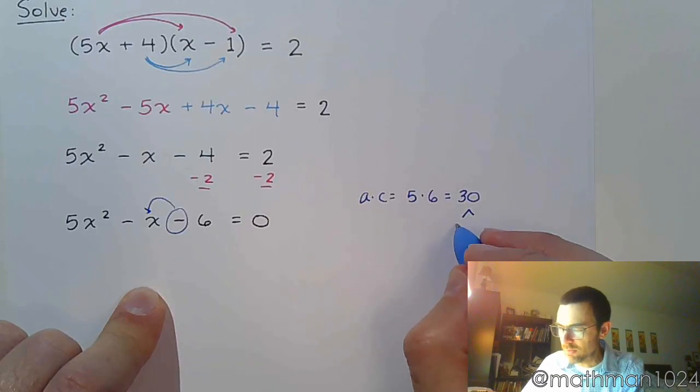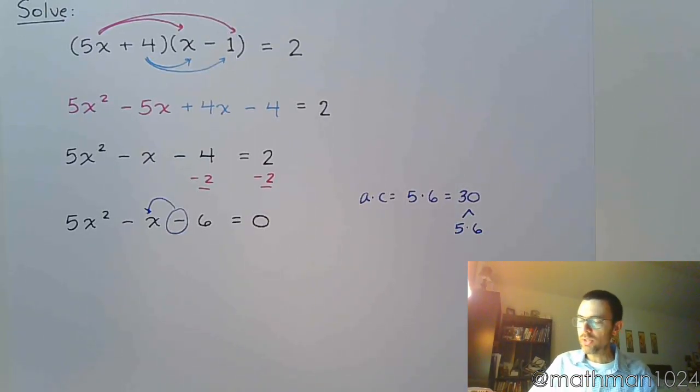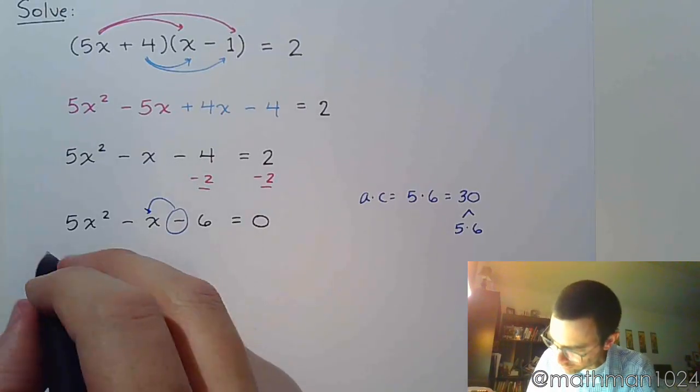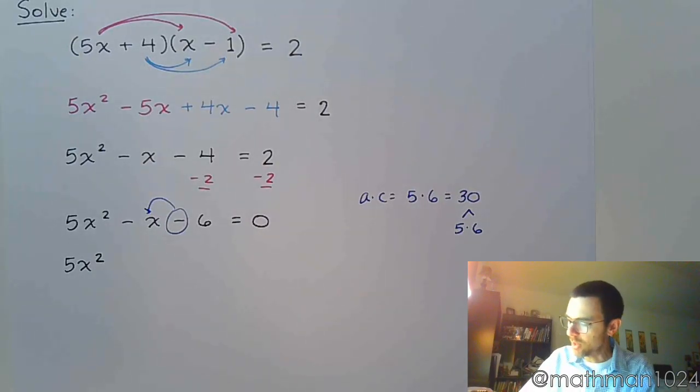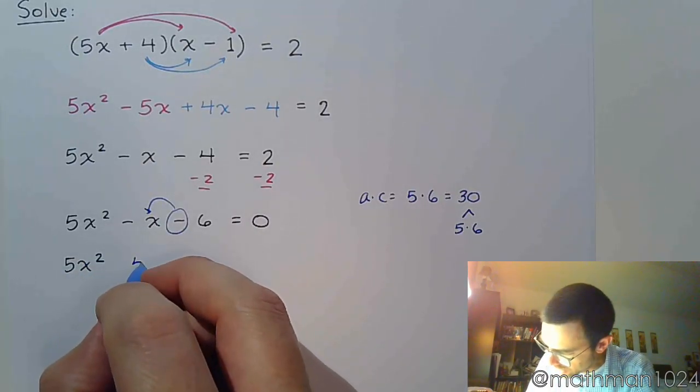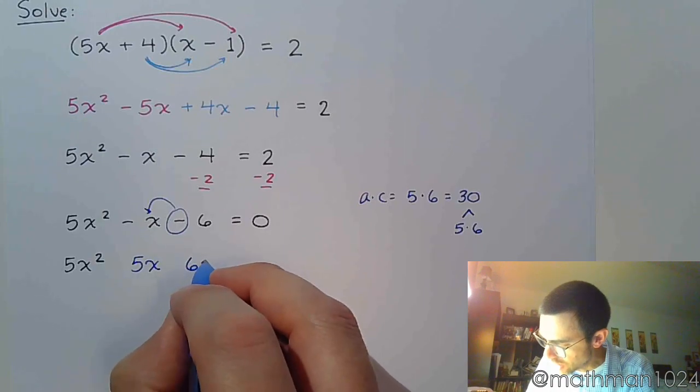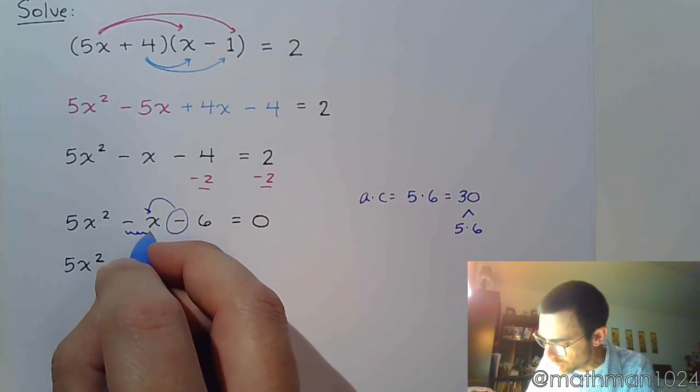Oh, wouldn't that just be 5 and 6? All right. Let's see how that works out for us. All right. So there's 5x squared. I need to have a 5x and a 6x here as we rewrite this middle term.